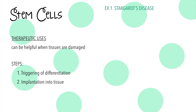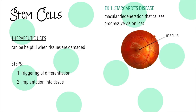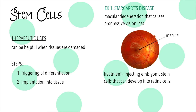The example the IB requires you to know is Stargardt's disease — basically a juvenile macular degeneration in the retina of your eye, which results in progressive vision loss. To treat this, stem cells attach to the retina and grow, regenerating the photoreceptors in your eyes and restoring your vision. This improves vision and is typically for younger people from ages 6 to 12, because vision loss is prevalent during that age range.